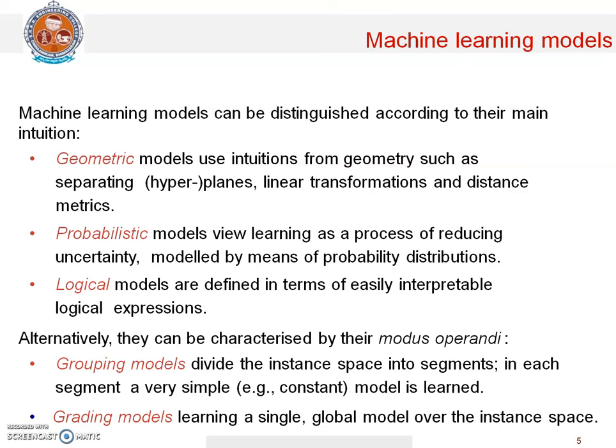Probabilistic models view learning as a process of reducing uncertainty, modeled by means of probability distributions. Logical models are defined in terms of easily interpretable logical expressions. Alternatively, models can be categorized into grouping models and grading models. Grouping models divide the instance space into segments and in each segment a very simple model is learned. Grading models learn a single global model over the entire instance space.